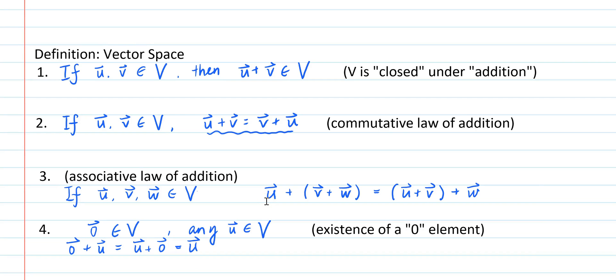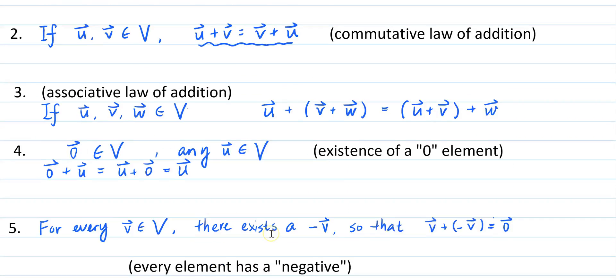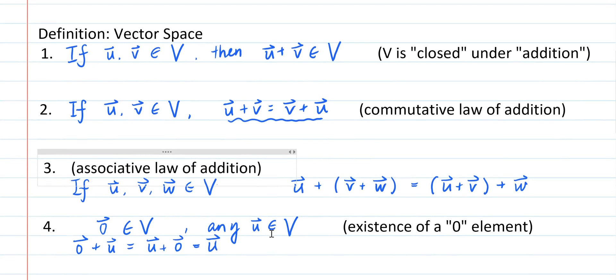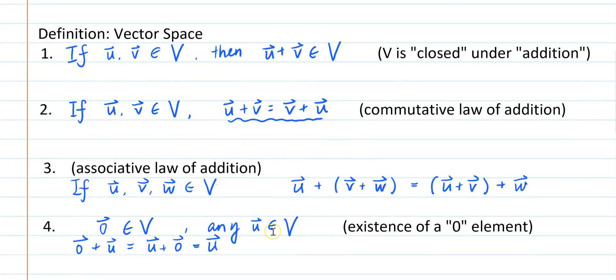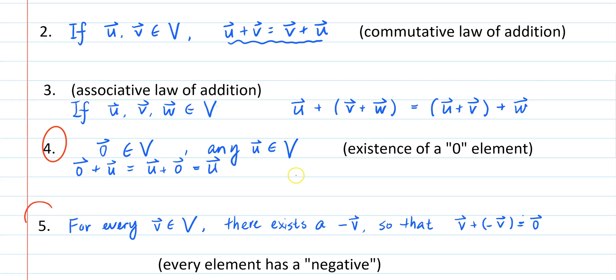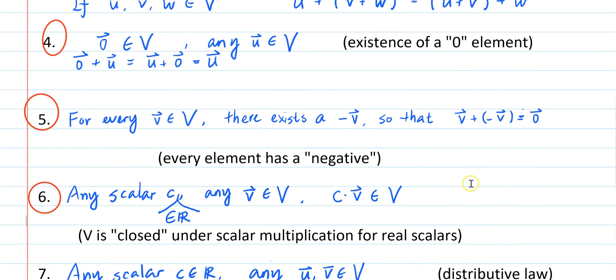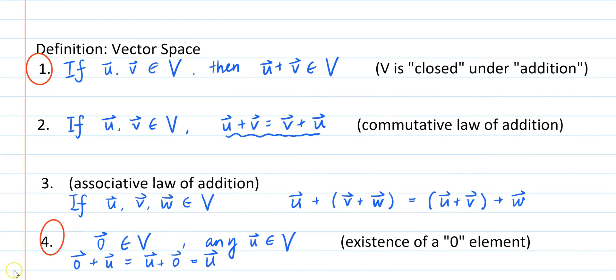The key to answering this question is to understand that once we know that these ten axioms are true for a set V, which makes V a vector space, then six of these axioms are automatically true for all subsets of V. While the remaining four, which are axioms one, four, five, and six, these four axioms are only true for subspaces of V. Let me explain the details.